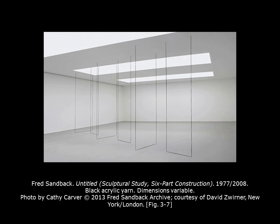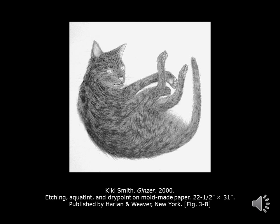Continuing with looking at line in a different light is this untitled work by Fred Sandback from 1977 and 2008, where he took black acrylic yarn in a three-dimensional space and created rectangular line art. In this print from Kiki Smith, Ginger from 2000, she used all sorts of different printmaking techniques to get all these fine lines to represent the fur — we have etching, aquatinting, and drypointing, which is a type of engraving method on a metal plate. We'll be going over that in our printmaking section.